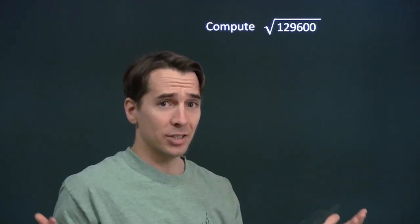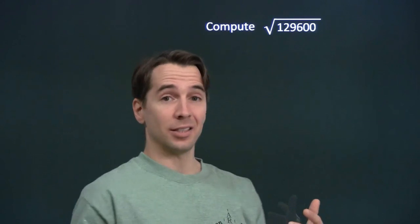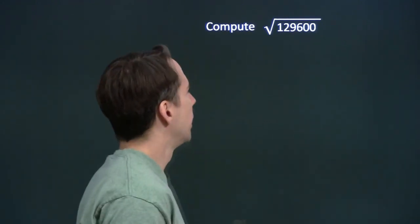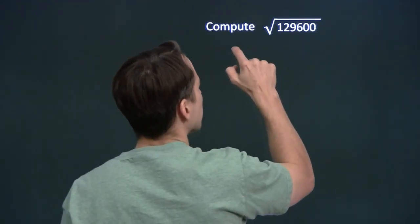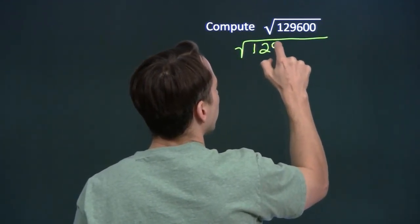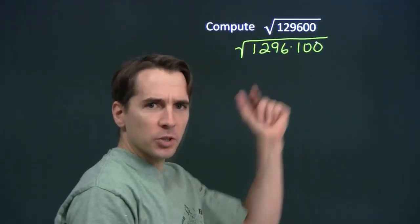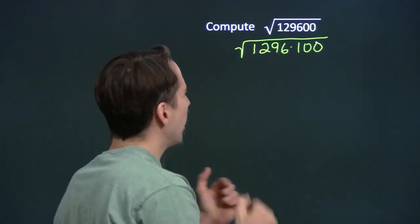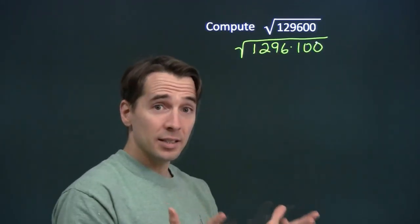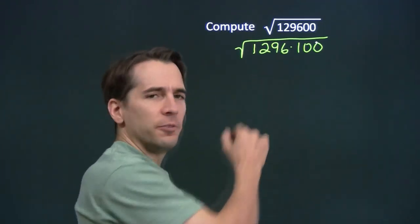I don't know what number we square to get 129,600, and I don't even know if 129,600 is a perfect square. But I do know that 100 is a perfect square, so I'm going to start by breaking this up into 1296 times 100. If I can figure out what 1296 is the square of, I can use the same approach we used on the last problem to finish this one.